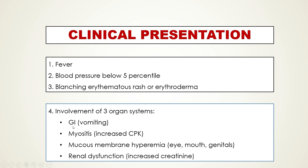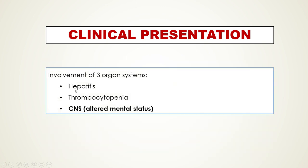Generally, patients will have involvement of three organ systems. This may include the GI system presenting with vomiting, myositis with an increased CPK presenting as sore muscles, mucous membrane hyperemia of the eye, mouth, or genitals, and renal dysfunction detected by an increased creatinine on lab work. Patients may also develop hepatitis with bumped LFTs, thrombocytopenia or low platelet count, and altered mental status.